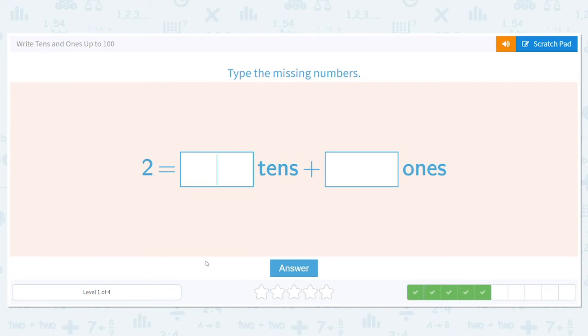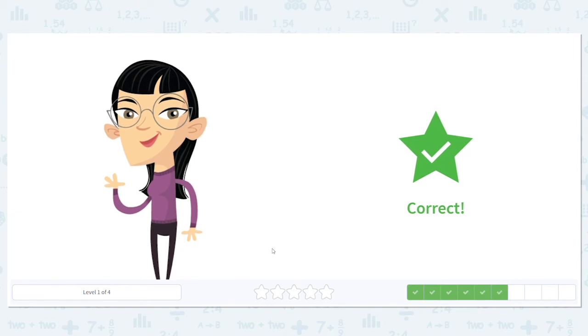Excellent job. Next we have the number two. Is two greater than ten? No it's not. So do I have any tens? Right I don't. How about ones? The answer is already given. It's two. And we are more than halfway done. Keep it up.